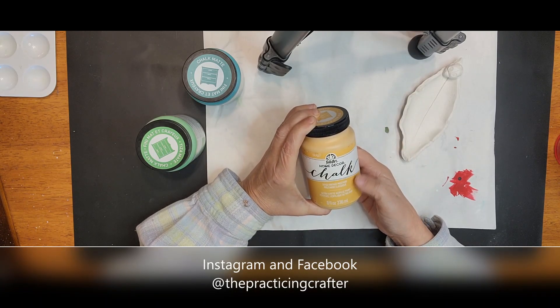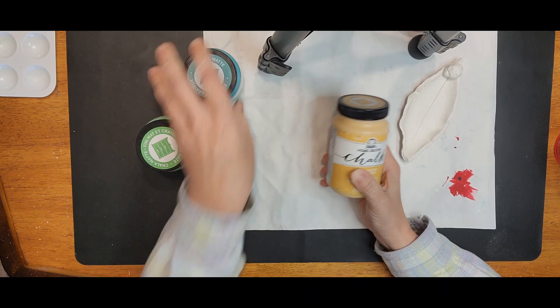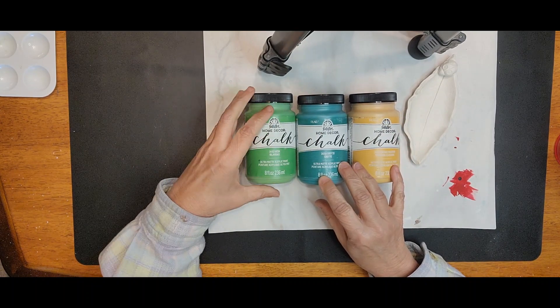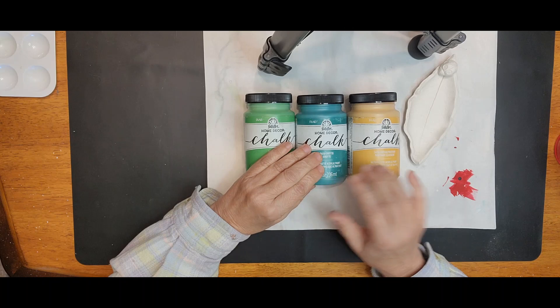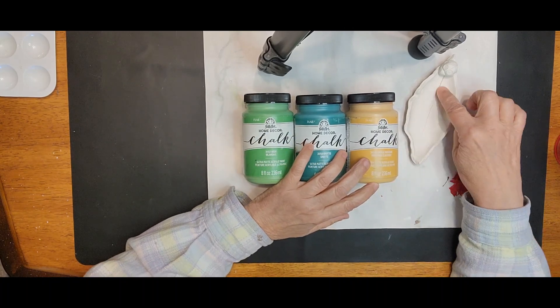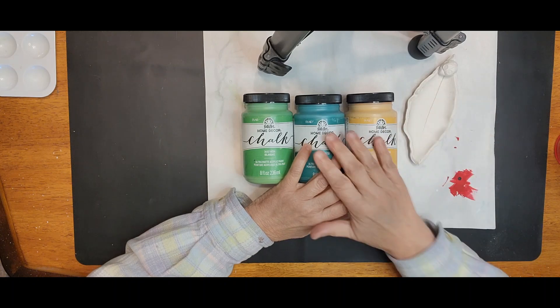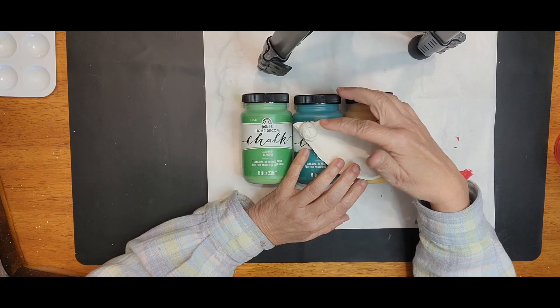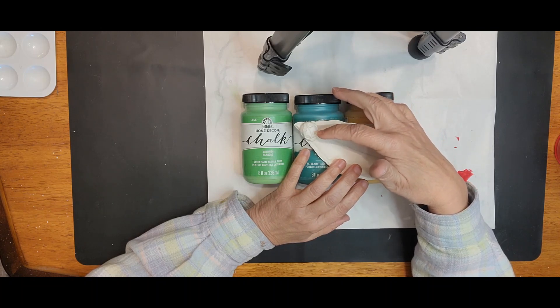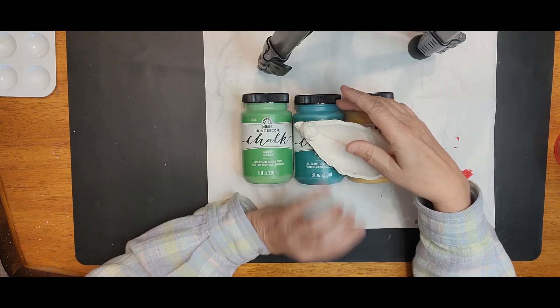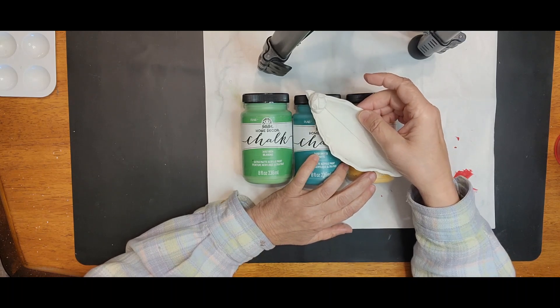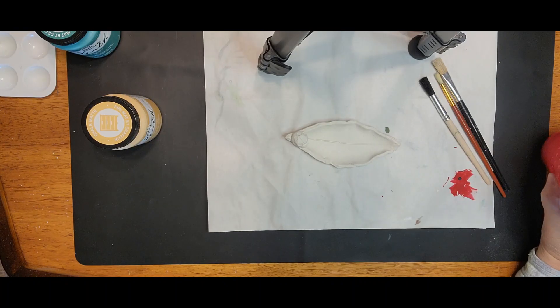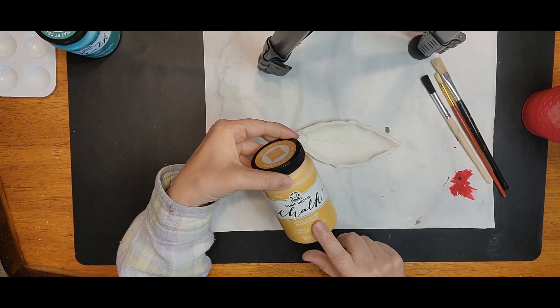I will be layering vintage mustard, grotto, and Irish on the leaf itself in that order. Then for the cute little ladybug, we will use red chalk paint, black dots, and some white. Let's get started getting this leaf painted. I have some clean water, paint brushes, and the mustard.